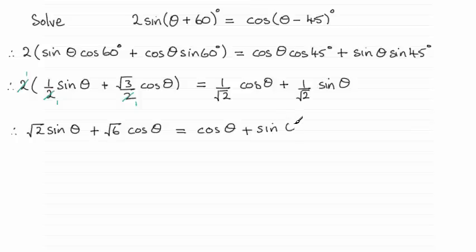Now it's at this point that I'm going to divide through by cos θ. So I'll just note that I'm dividing through by cos θ. If we do that, we end up with √2 sin θ over cos θ, which is tan θ.